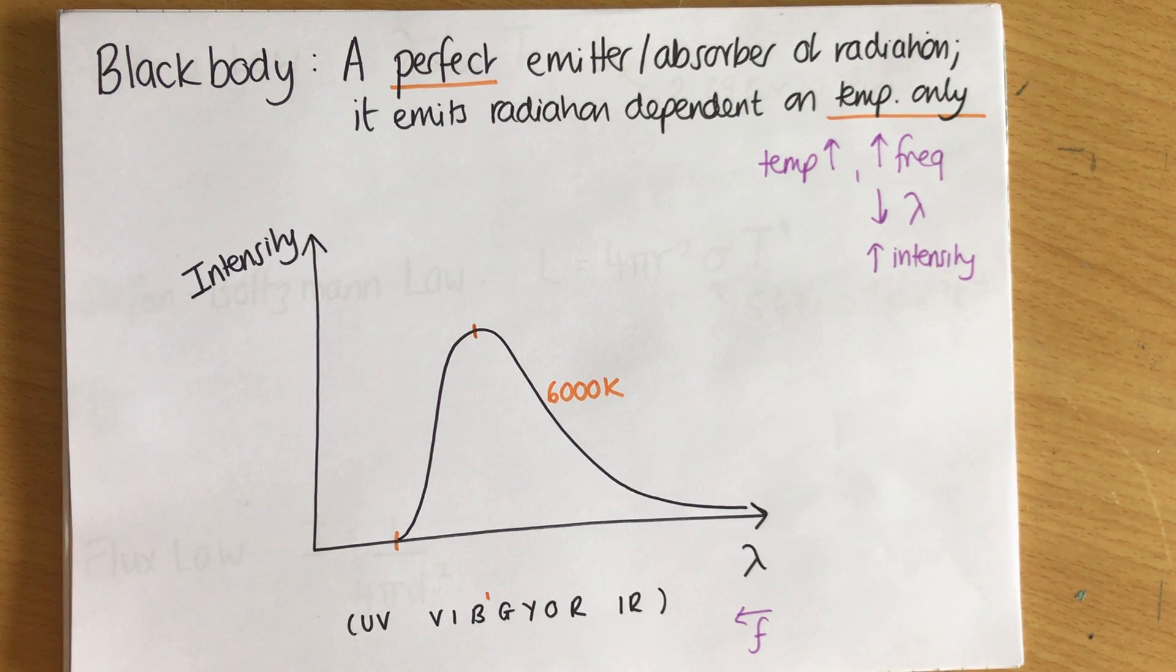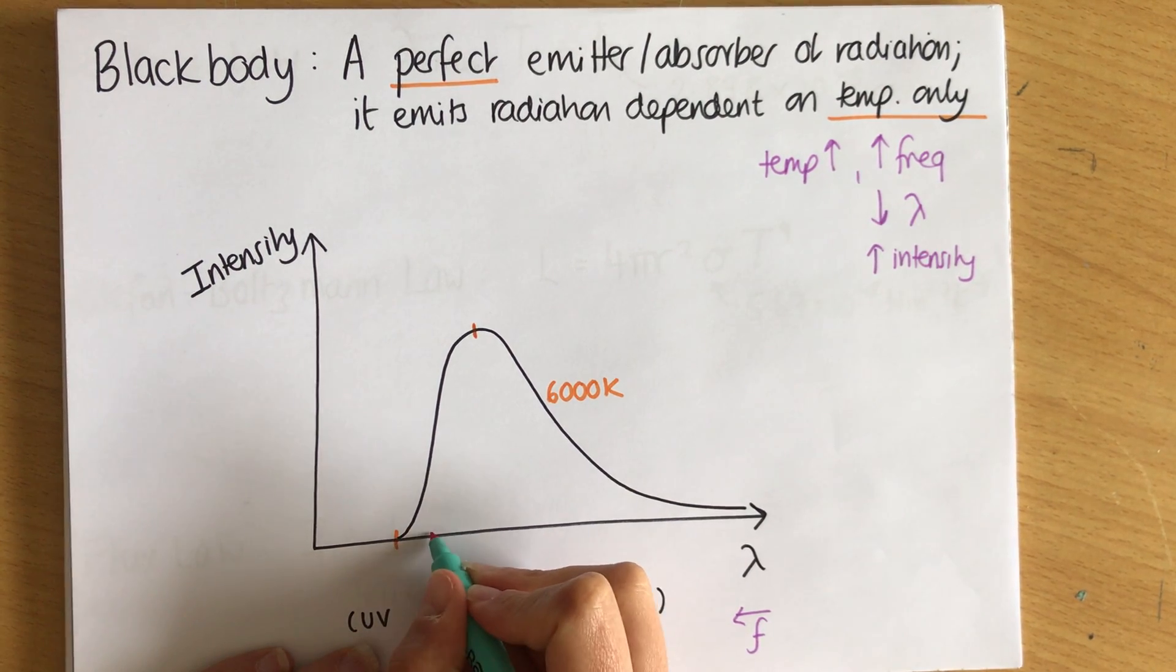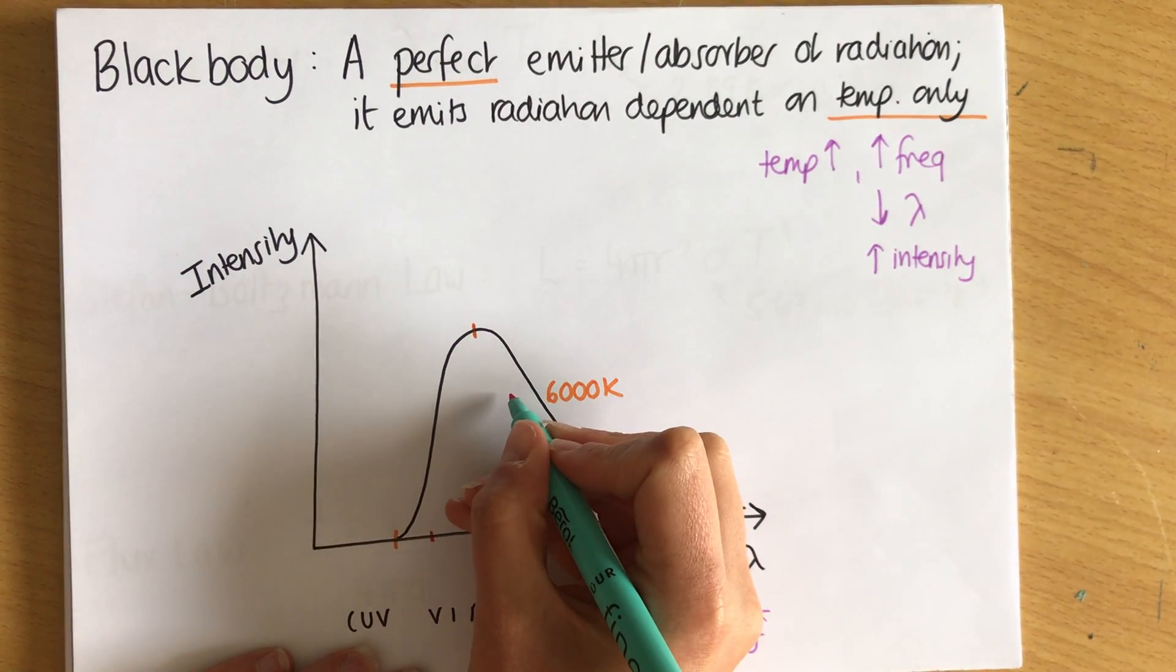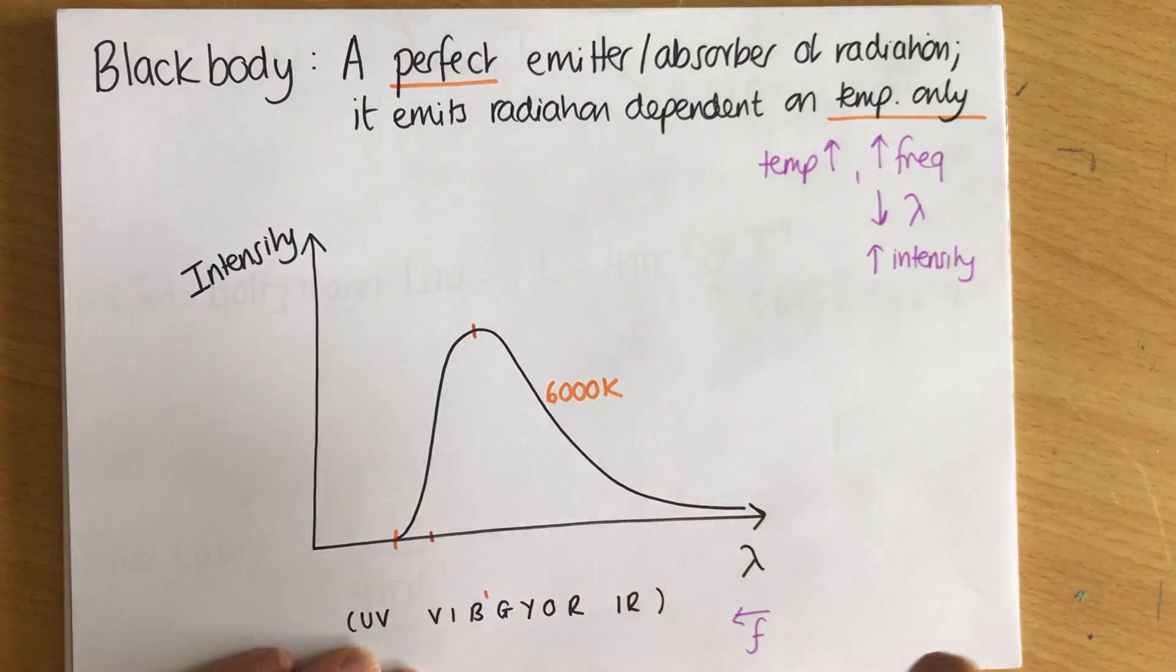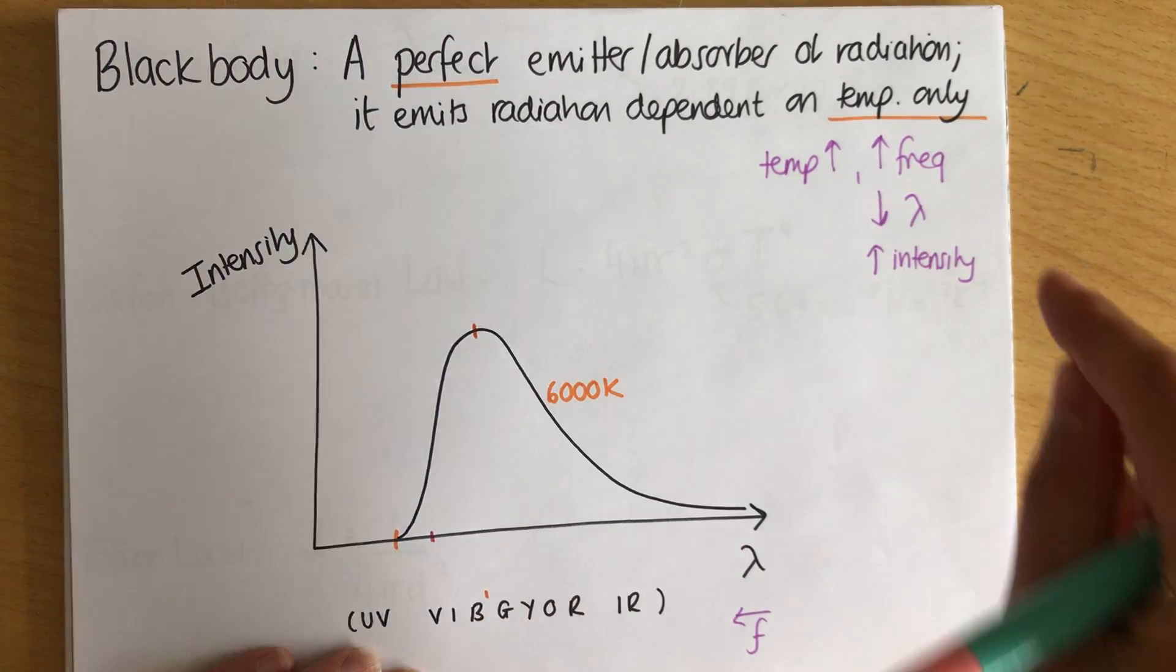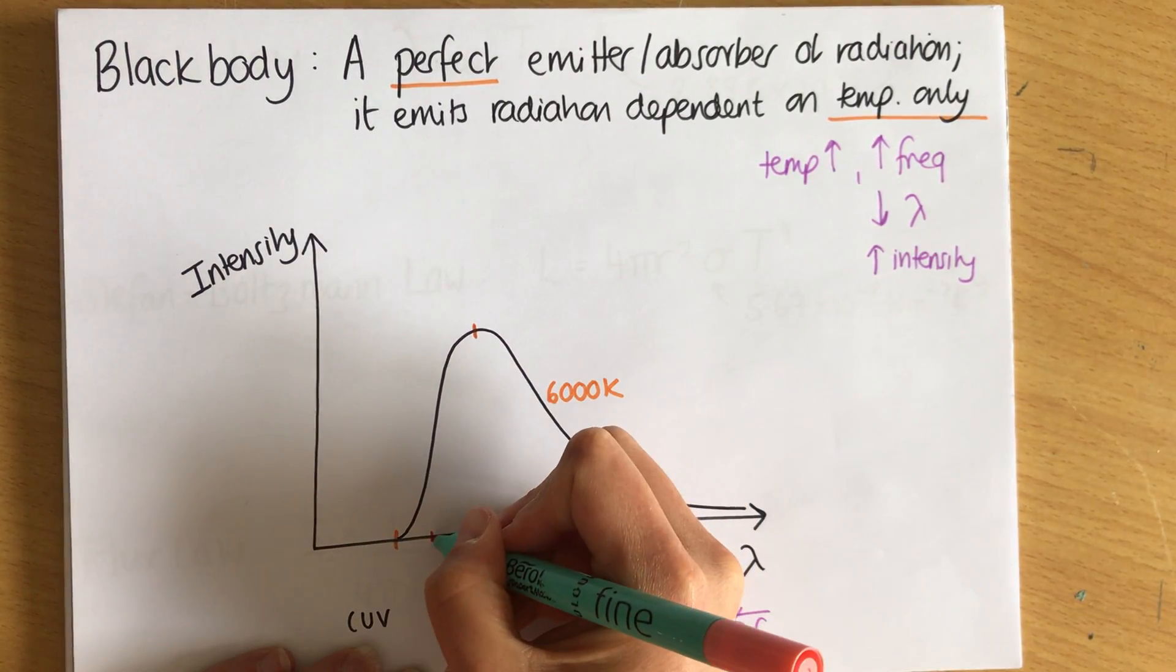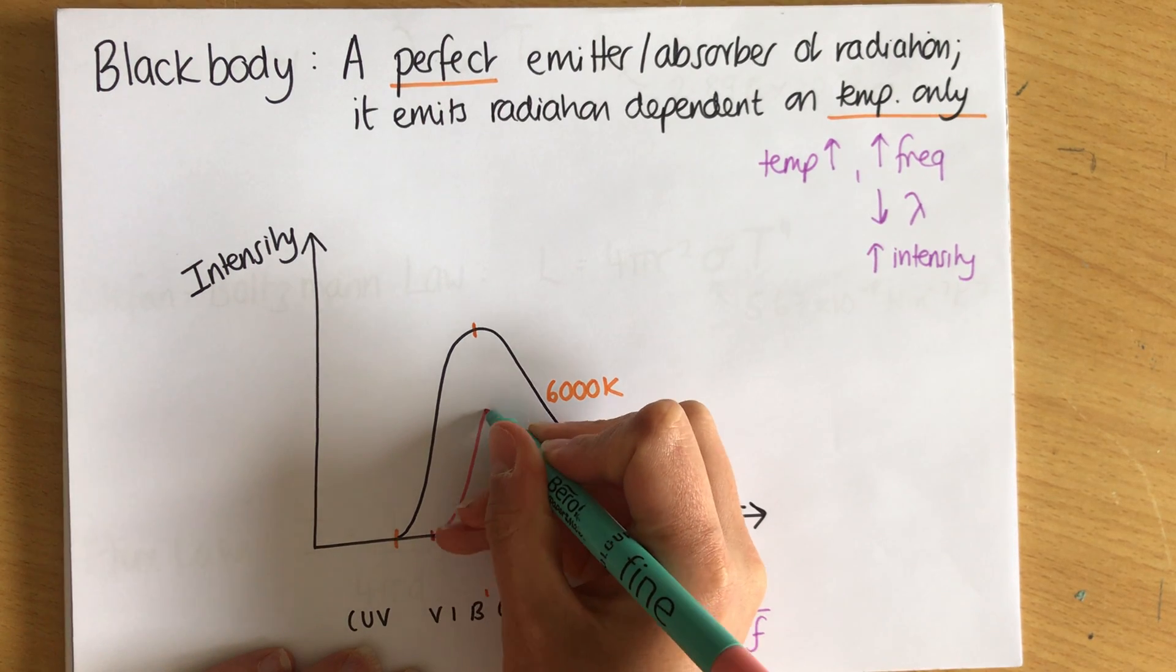Now, I could draw here a colder star and a hotter star, and that's what I'm going to do. So I'm going to start with a colder star. So a colder star would have a lower start point. It would also have a lower peak, because it's not going to give out as much intensity of radiation. And that peak is going to be further over, because the lower the temperature, the lower the frequency, and the higher the wavelength. So the peak might be here.